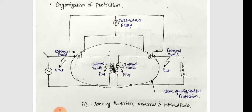The farthest point from the relay location which is still inside the zone is called the reach point. Thus, the distance between the relay location and the reach point is termed as the reach of the relay.